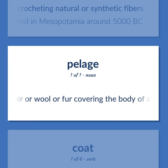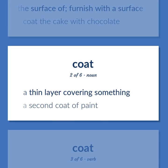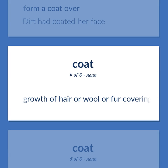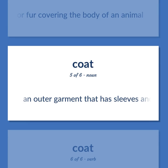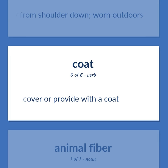Coat: Growth of hair or wool or fur covering the body of an animal. Put a coat on; cover the surface of; furnish with a surface — coat the cake with chocolate. A thin layer covering something — a second coat of paint. Form a coat over — dirt had coated her face. An outer garment that has sleeves and covers the body from shoulder down, worn outdoors. Cover or provide with a coat.